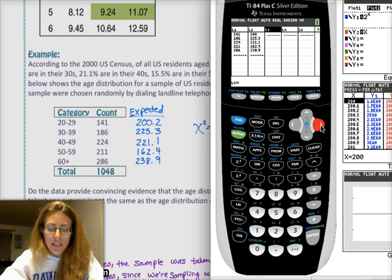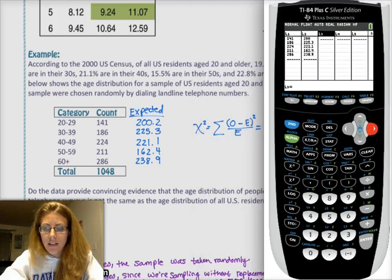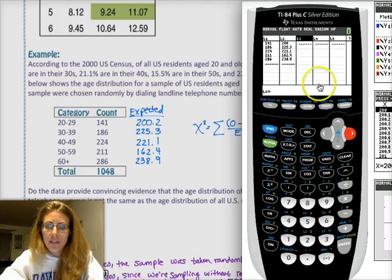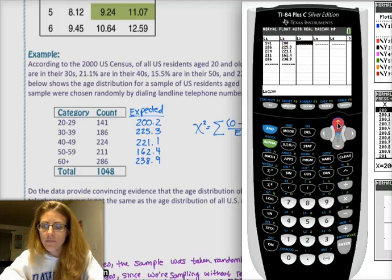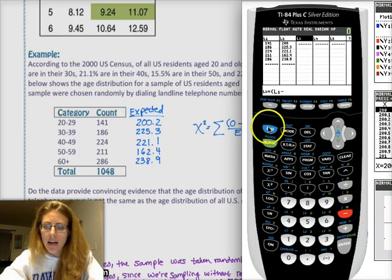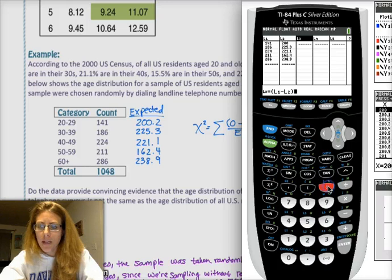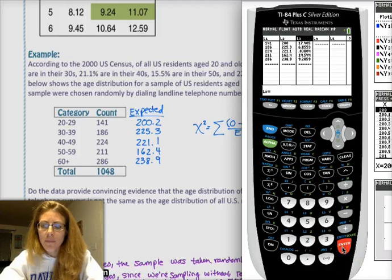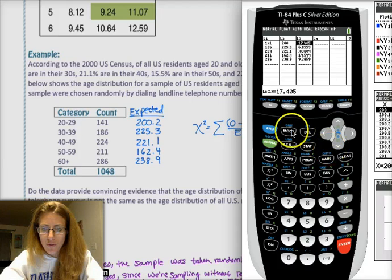Then what we need to do is we need to actually calculate this chi-squared, which is observed minus expected squared over expected. The nice thing about the calculator is I can go into my list three and hit enter, and then what I want in list three is my L1 values, my list one values, minus my L2 values, my observed minus expected, squared, and then divide that by my expected values, list two. Hit enter. Those are all my individual values.